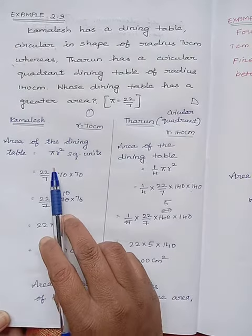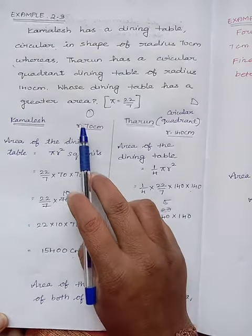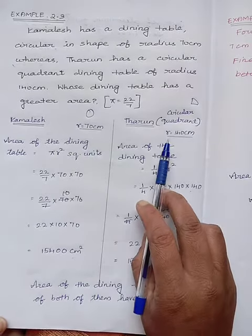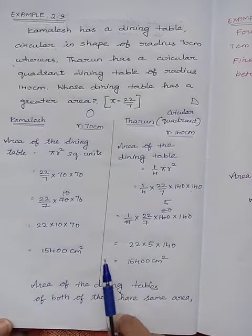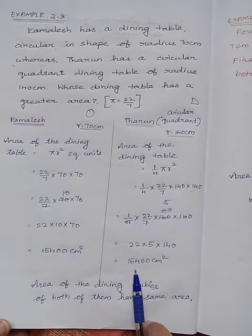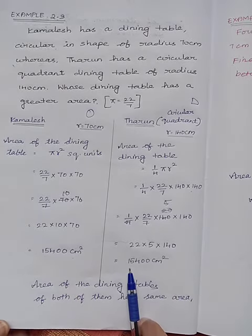Even though it is in the circle shape and quadrant shape, here the radius value changes. According to the radius value, we can find that both are in same area. Both have the equal area.